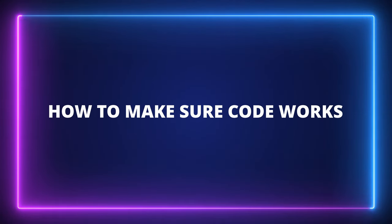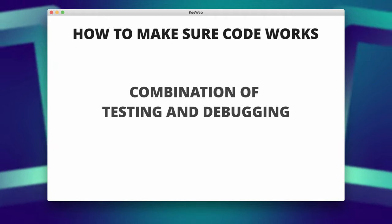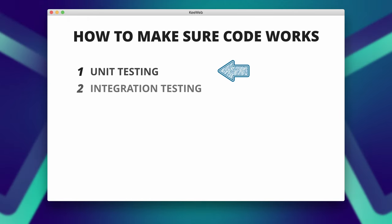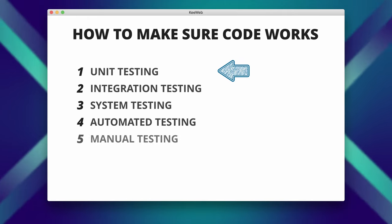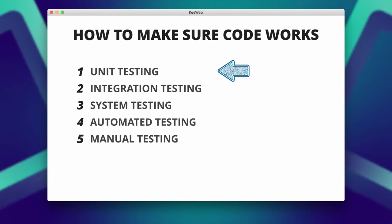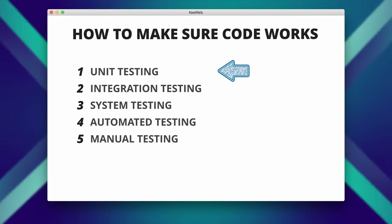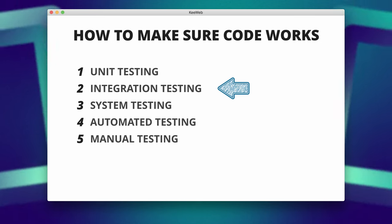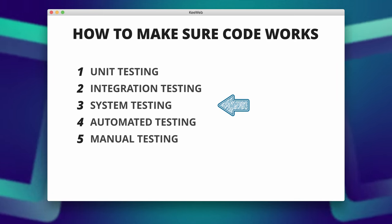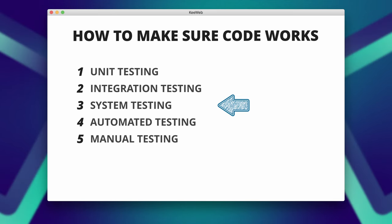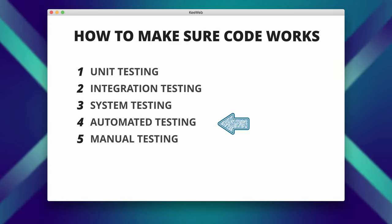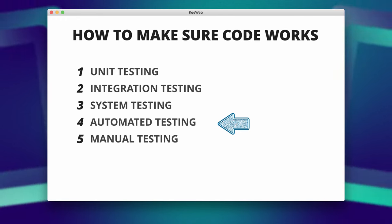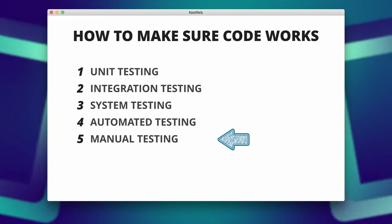How do you make sure that the code you have written works? This involves a combination of testing and debugging. The first way is unit testing: write test cases to verify correctness of individual functions or units of code and cover different scenarios and edge cases. Integration testing: test the interaction between different components or modules of your codebase. System testing: test the entire system as a whole, including its dependencies and external services. Automated testing: implement automated testing frameworks or tools to streamline the testing process. And finally, use manual testing.